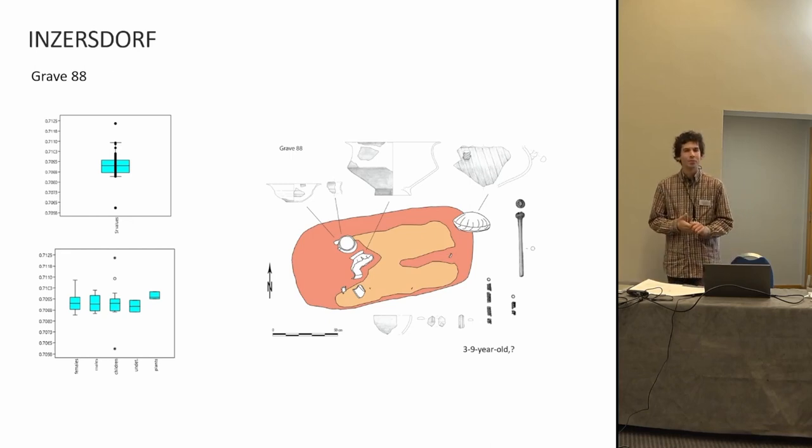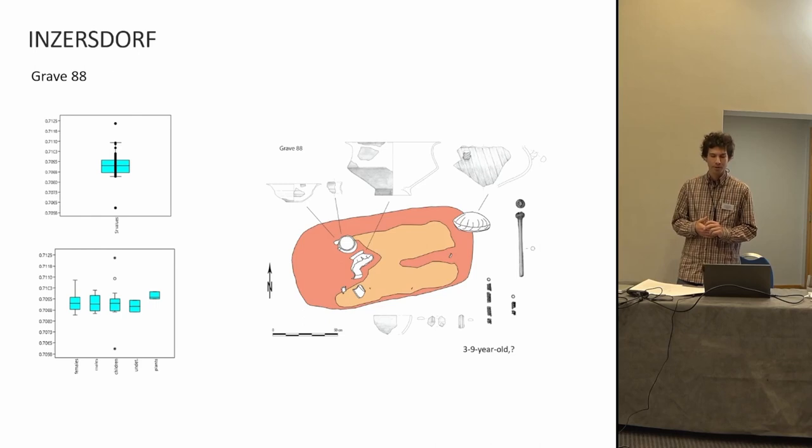The other outlier is a three to nine-year-old from a double burial, where the other individual was an adult male, who was within the local range. The non-local was associated with a bronze casting mold, perhaps pointing to a metal-related trading network. Through the social mechanisms of apprenticeships or marriage, migration may have played a role in the knowledge transfer.